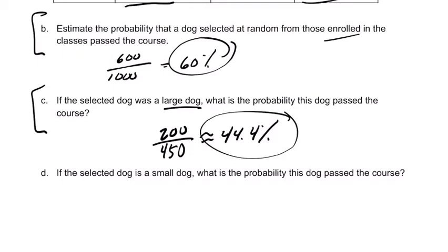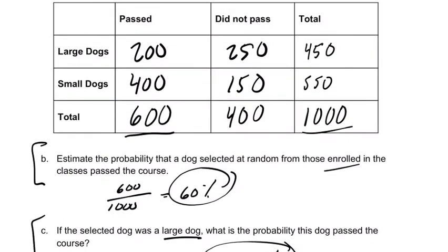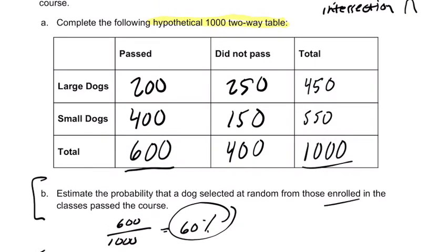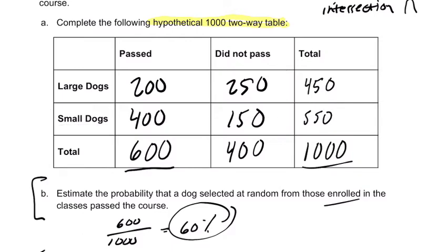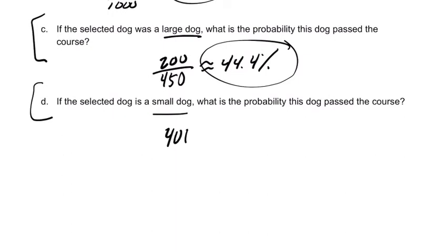If the dog is a small dog, what is the probability of passing? There are 550 small dogs — that's this row — and 400 out of 550 passed. That's definitely bigger than one half. 400 divided by 550 equals 72.7%.